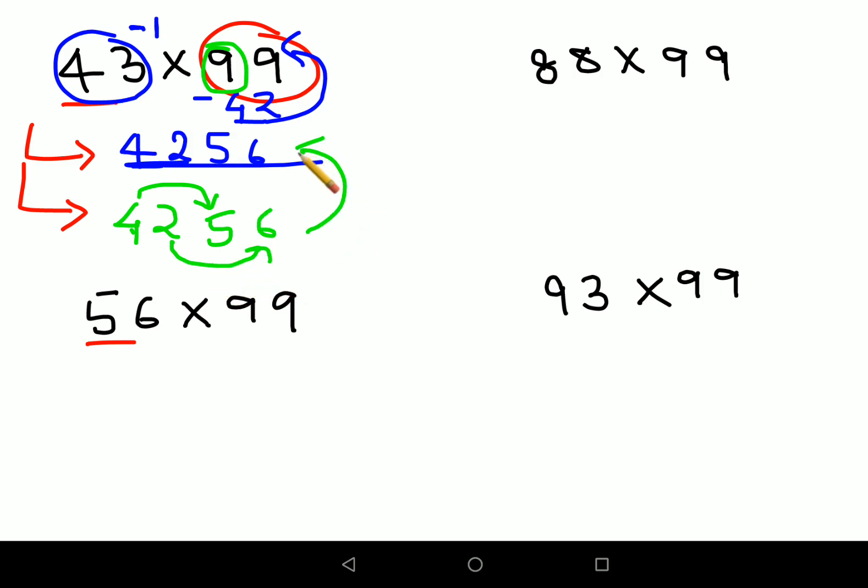So this works or this works, whatever works for you, you can decide. Now over here, 56, so obviously subtract 1 from 56, you get the answer as 55. And then what you need to add to 5 to get a 9 is 4, so obviously here also will be 4.